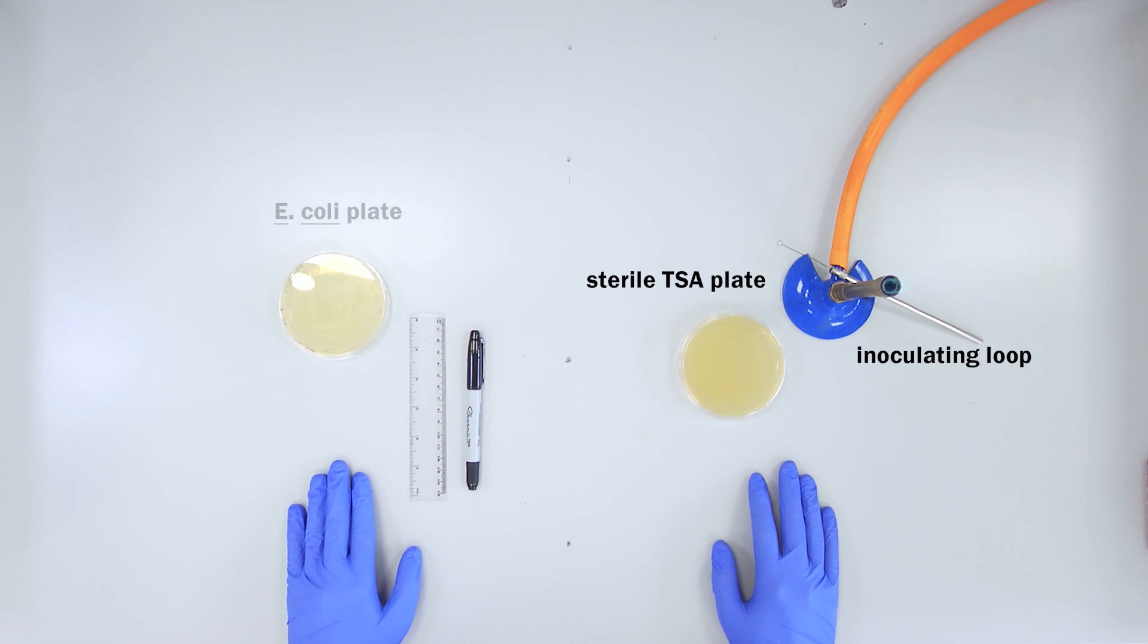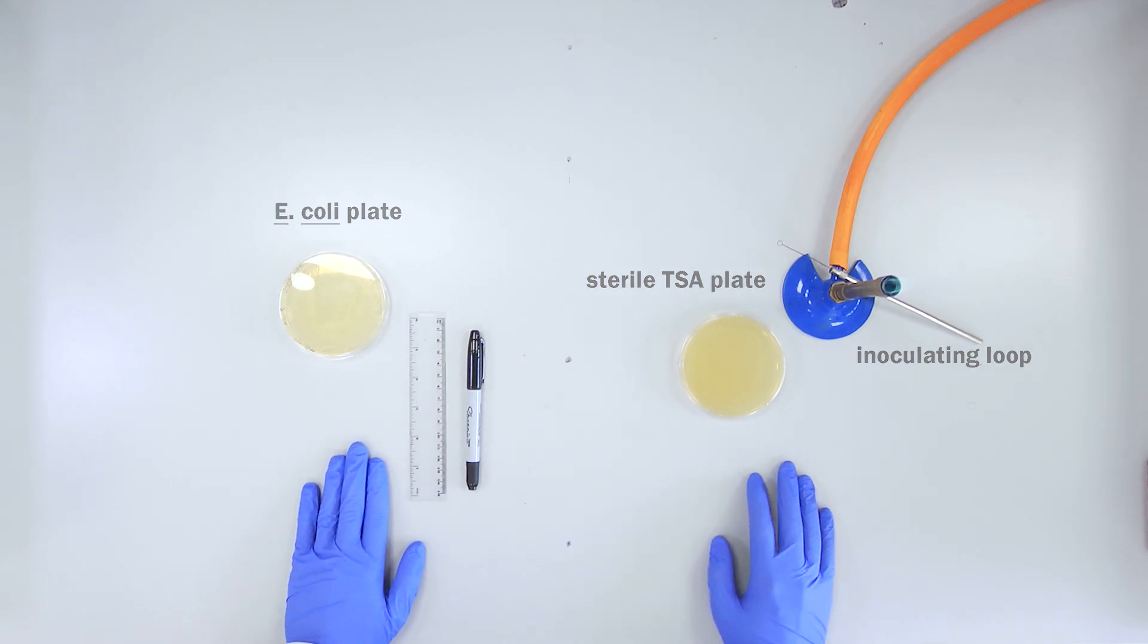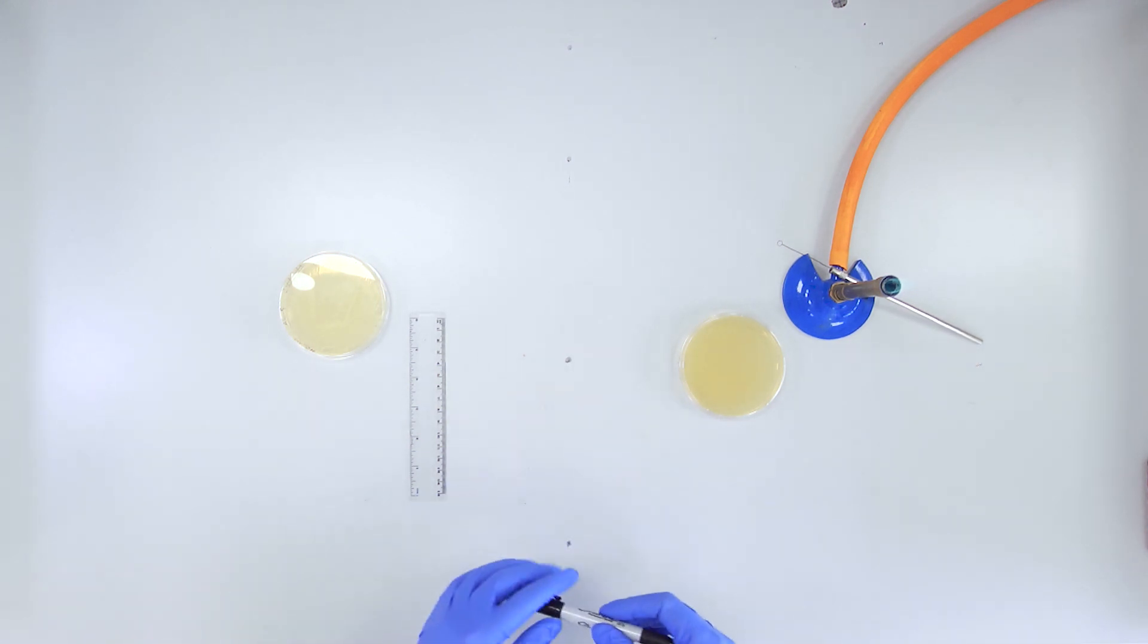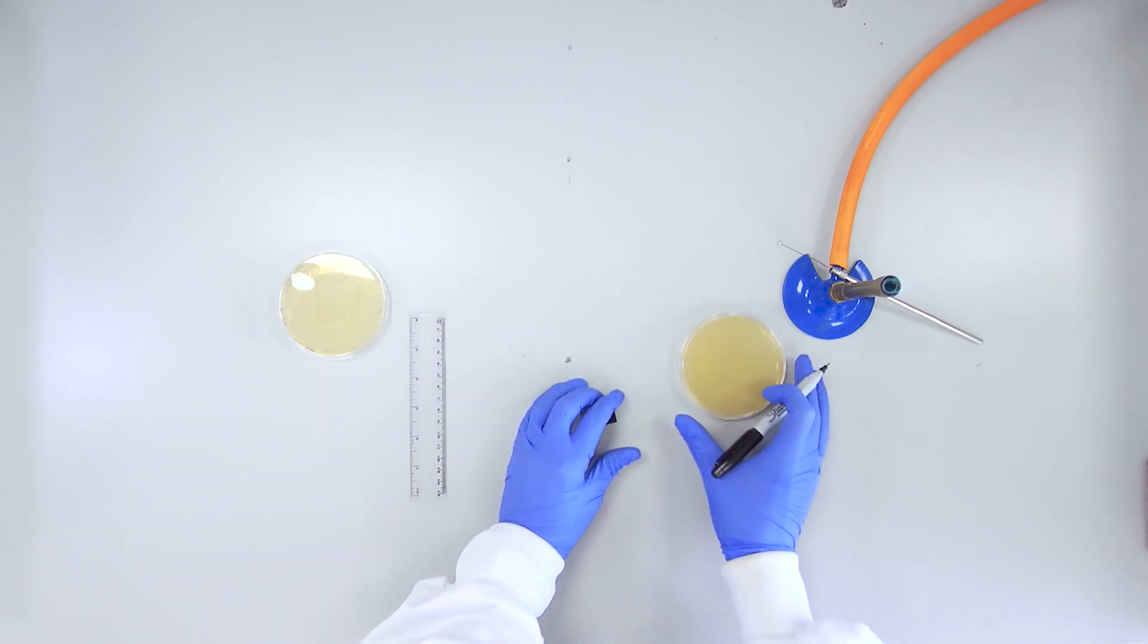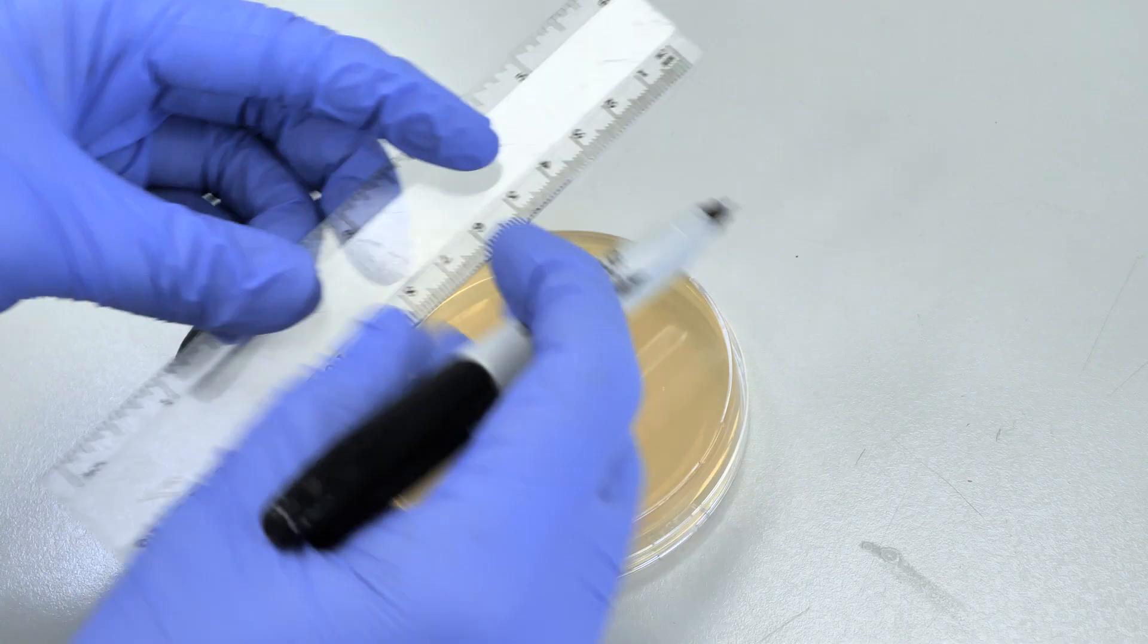a TSA plate that contains isolated colonies of E. coli that has been pre-prepared for you. Before you begin, make sure you are working beside your Bunsen burner, which will help to minimize possible contamination risks.